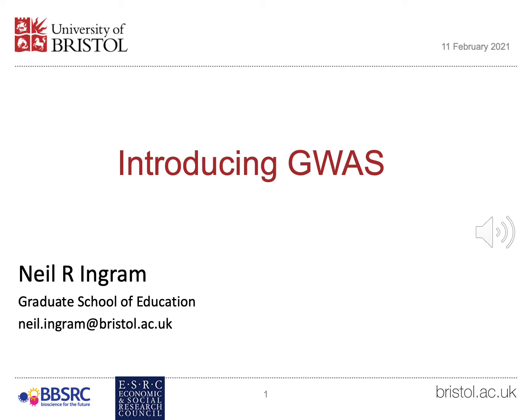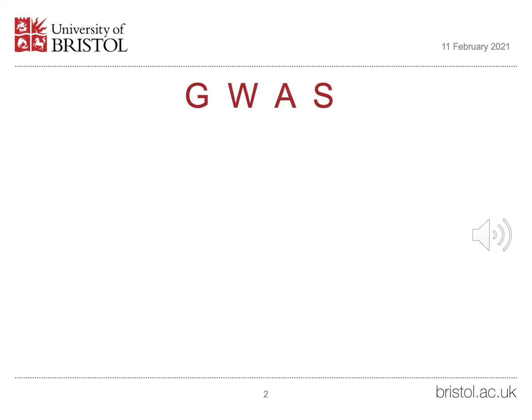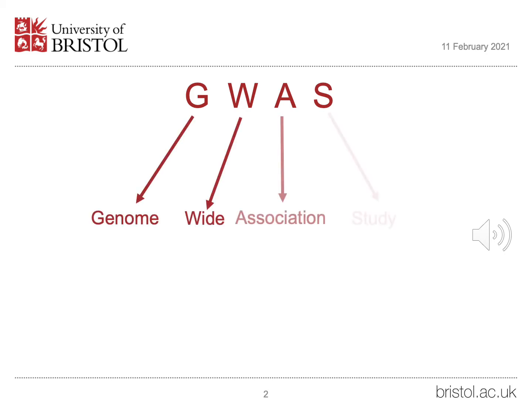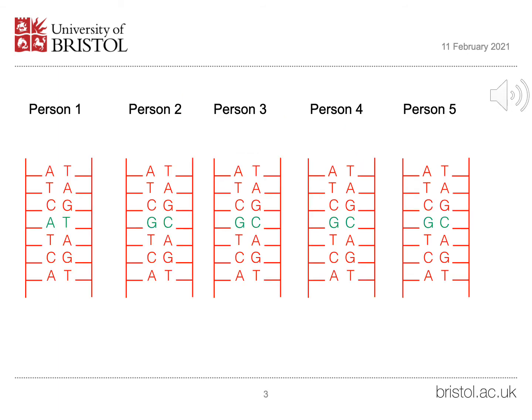This presentation introduces an important technique in genomics called GWAS, which stands for Genome-Wide Association Study. GWAS studies look for differences in DNA bases or groups of DNA bases across a large number of people. The effects of these individual differences on a particular complex characteristic is then measured.